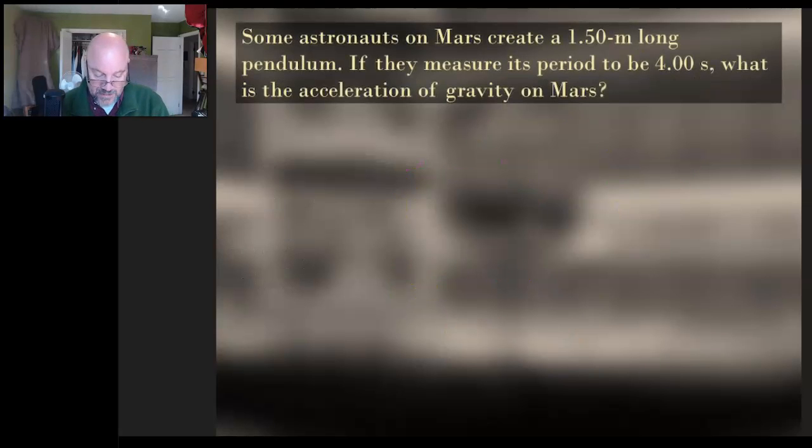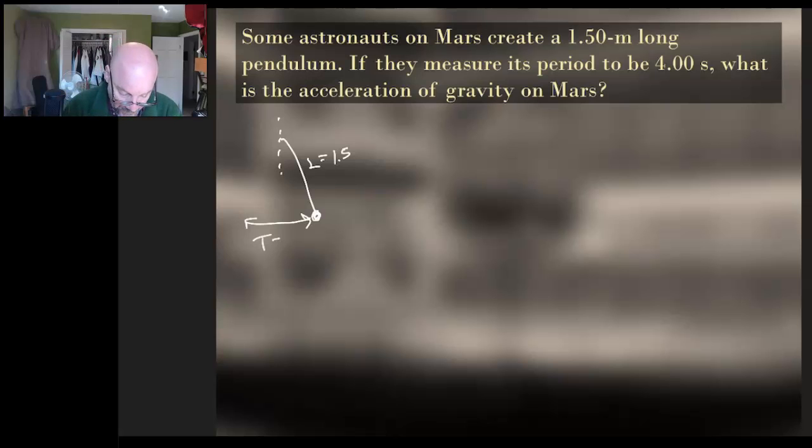The second one has to do with pendula. And so we've got a pendulum. It's on Mars. It's got a certain period. What's the acceleration? So let's draw a good picture. So that thing is going back and forth. Here's my pendulum. It has a certain length there. Just like that. And we know that the length is 1.5. We know that the period is 4 seconds.